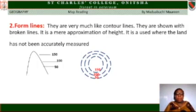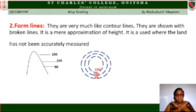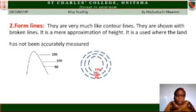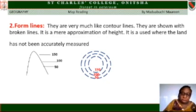Form lines are very much like contour lines but are shown with broken lines. They are a mere approximation of heights, used where the land has not been accurately measured. When a surveyor has not yet measured the area, being a specialist they can make a rough approximation of the height. But when the land is actually measured and the exact measurement is obtained, the line will be drawn as a solid line.